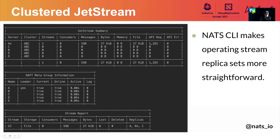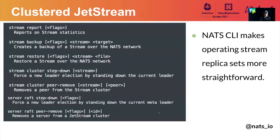We know that node A is the leader of what we call the meta Raft group. There is one stream named S1 using file-based storage, and the replica leader for this stream is node B. The NATS CLI has another set of functions to manage membership — you can ask any member to step down, triggering a new election so another member takes over the leadership. This lets you replace nodes in case of failure, all through the NATS CLI.